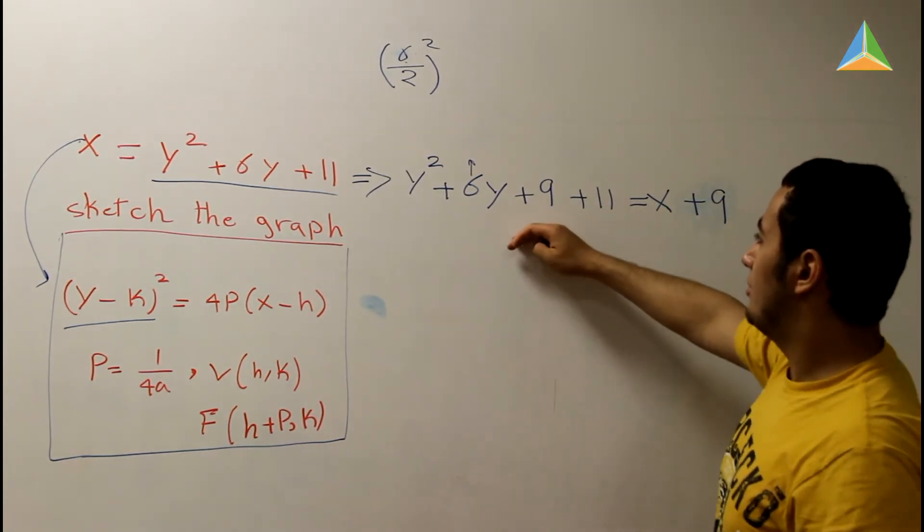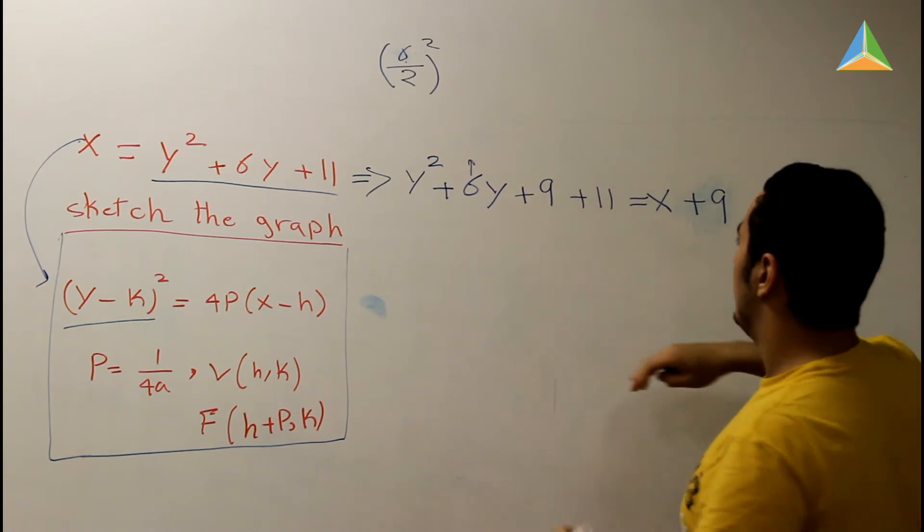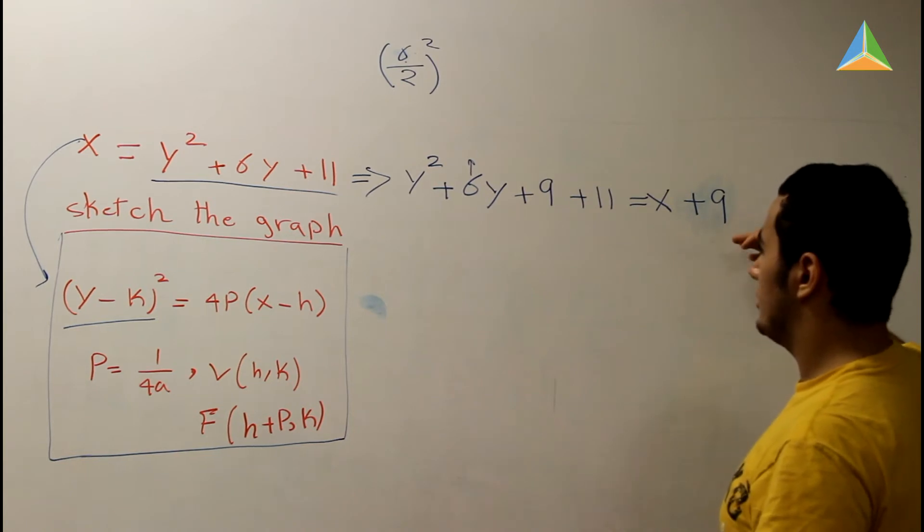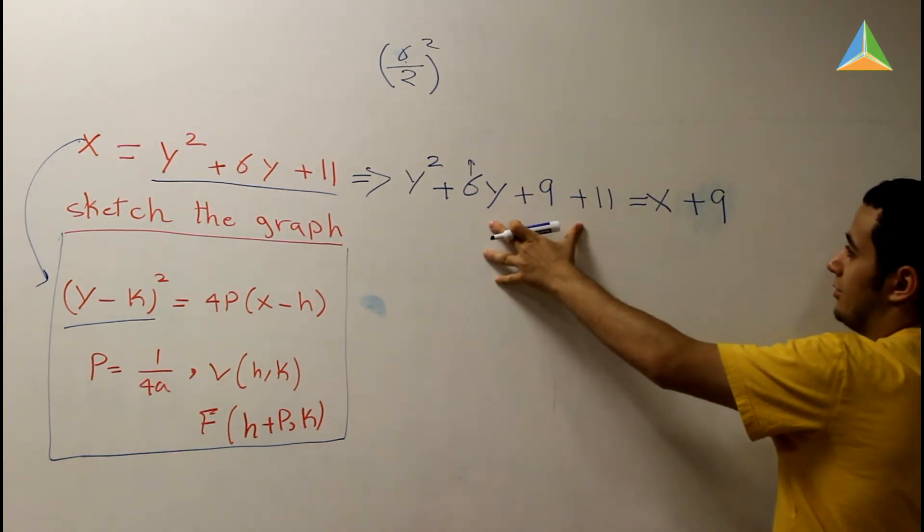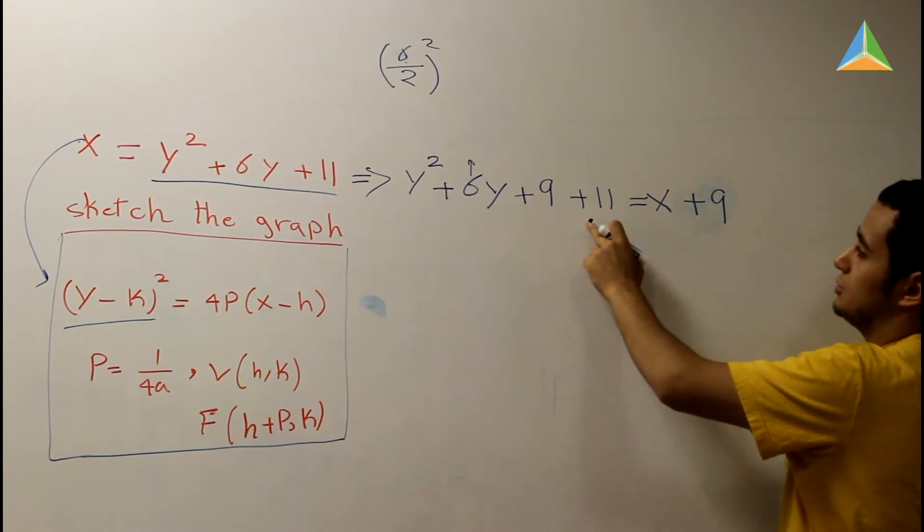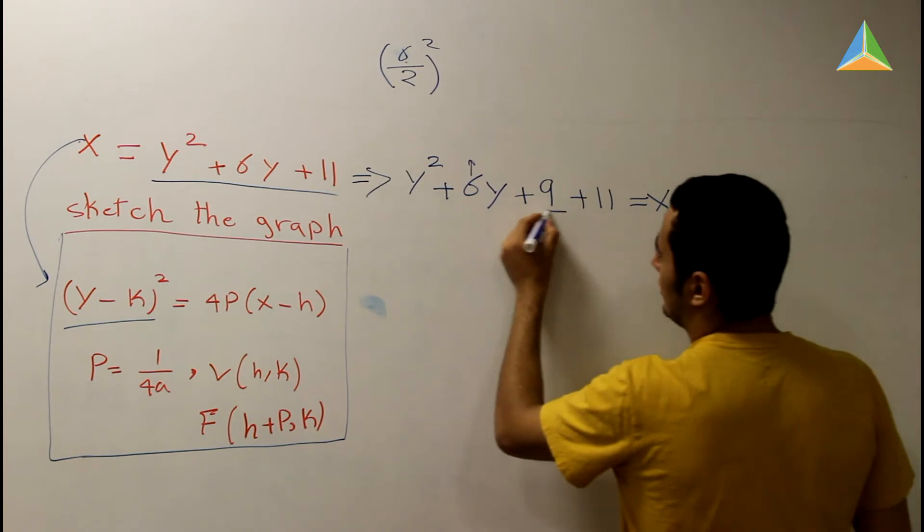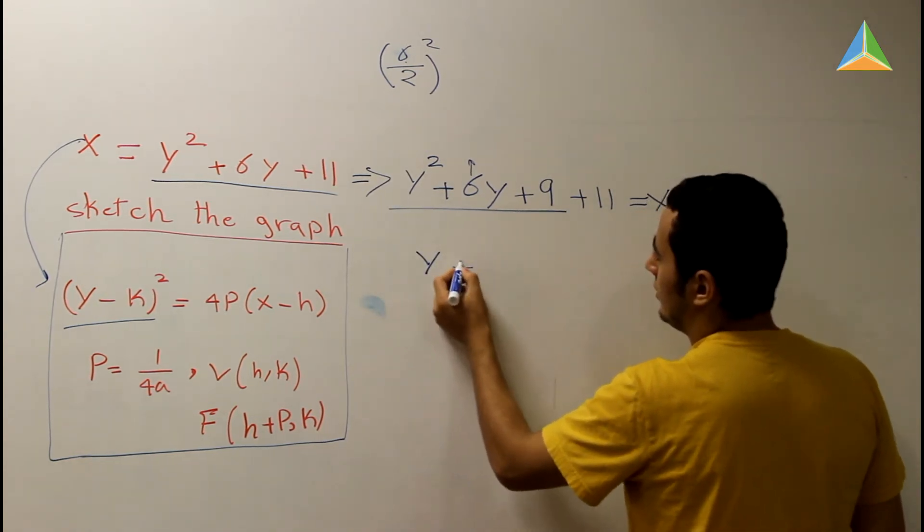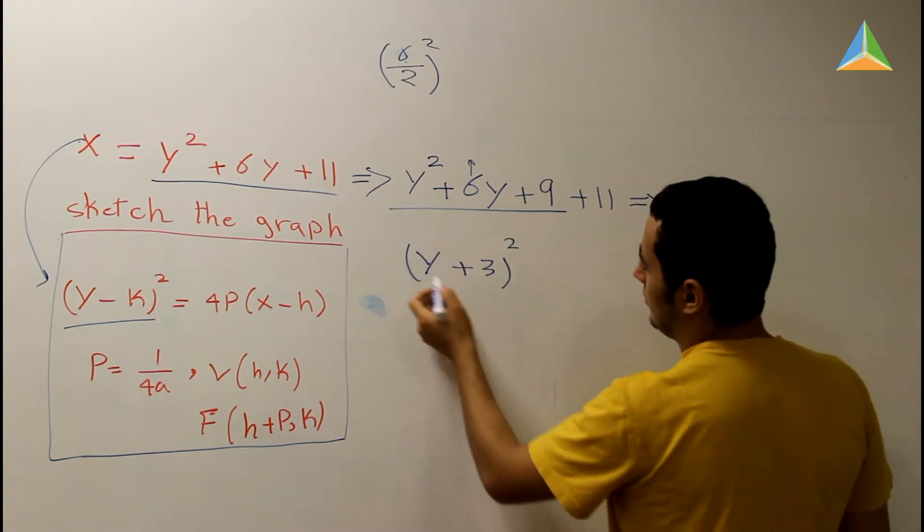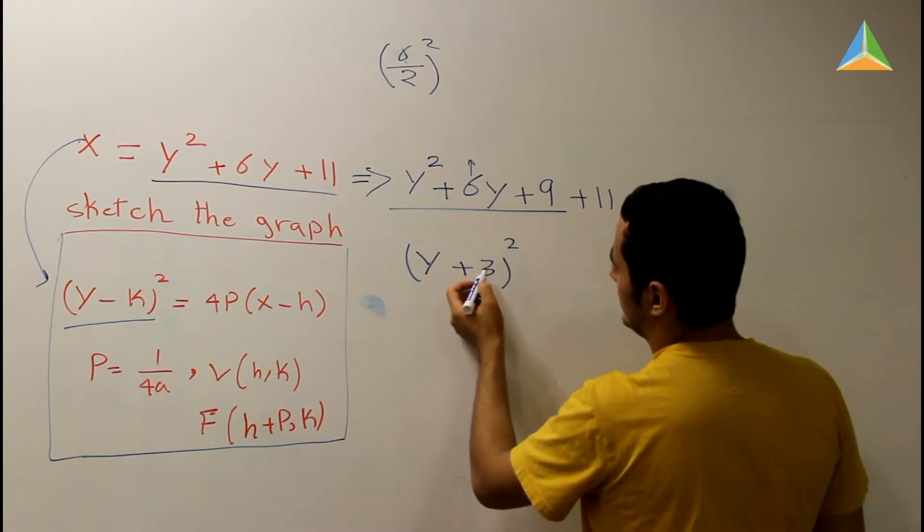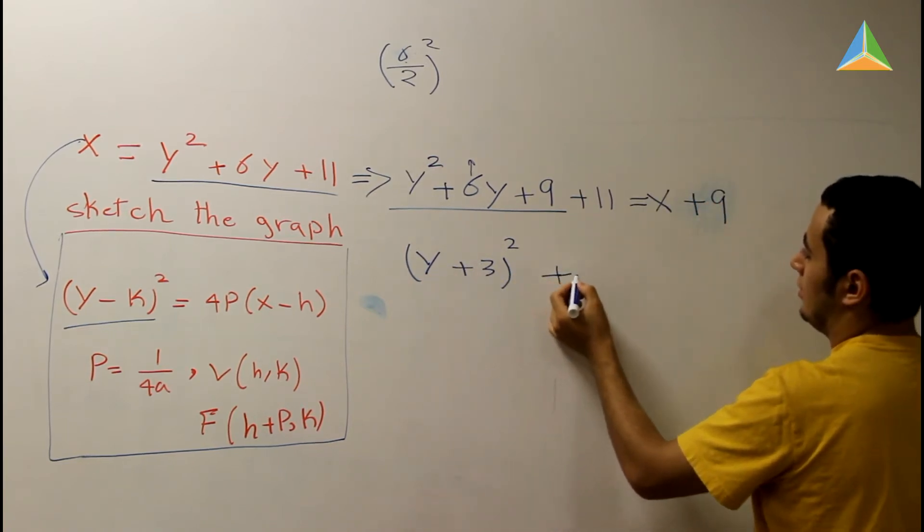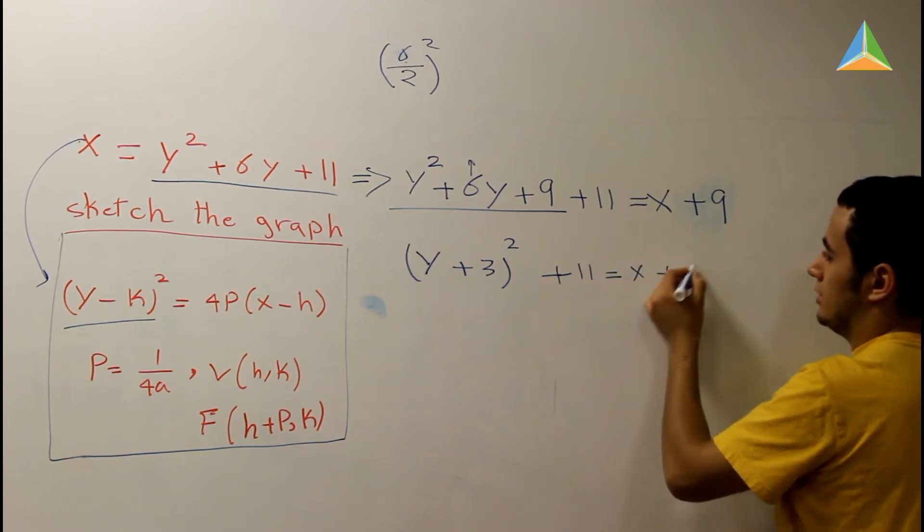Plus 11 equals x plus 9. If you add 9 to the left side, you have to add 9 to the right side. Or the opposite. If you add a number here, you have to add it here, or you can add it here and subtract it here as well. We're going to complete the square. This is going to be (y + 3)². And you can check that: y² + 6y + 9. That's right. Plus 11 equals x plus 9.